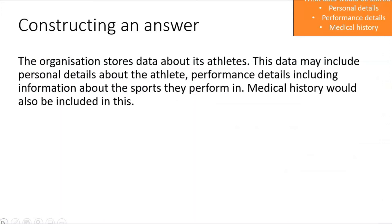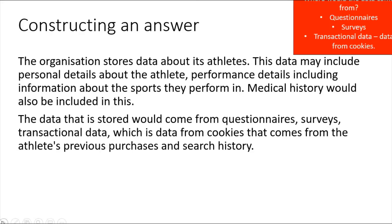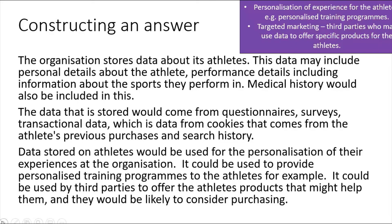Taking the first point — what data is stored: 'The organization stores data about its athletes. This data may include personal details, performance details including information about the sports they perform in, and medical history.' Second point — where does it come from: 'The data would come from questionnaires, surveys, and transactional data — data from cookies that comes from the athlete's previous purchases and search history.' Third point — what it's used for: personalization of experience, personalized training programs, and third parties offering products.